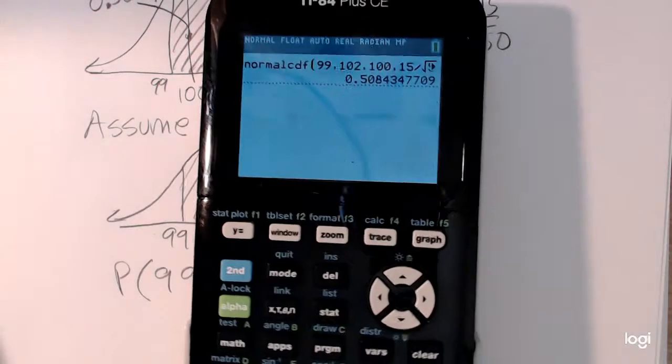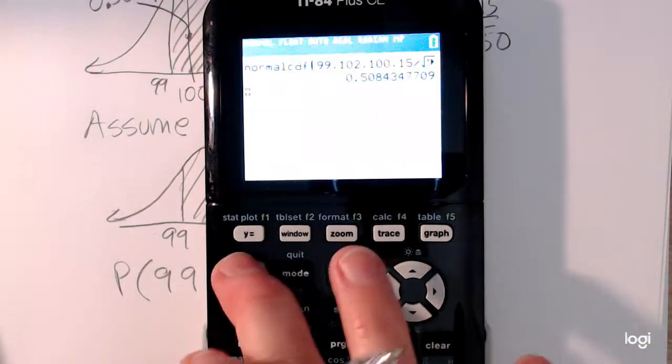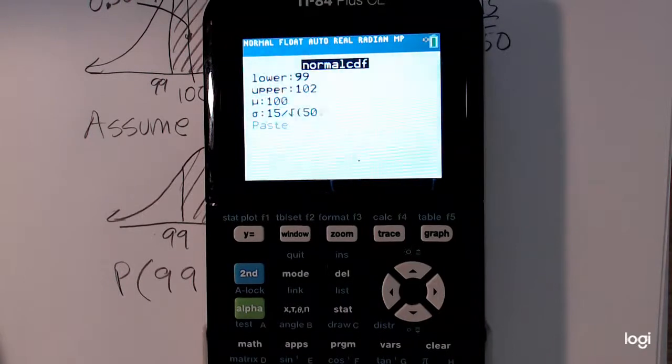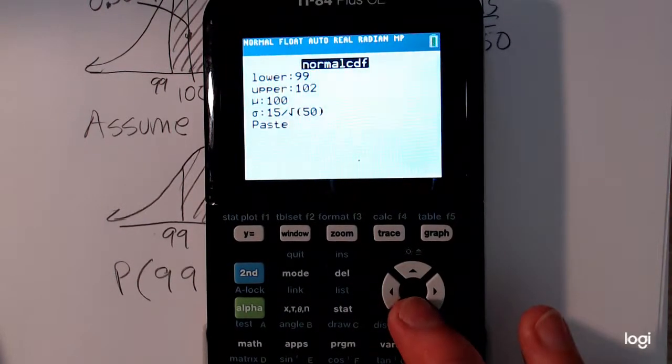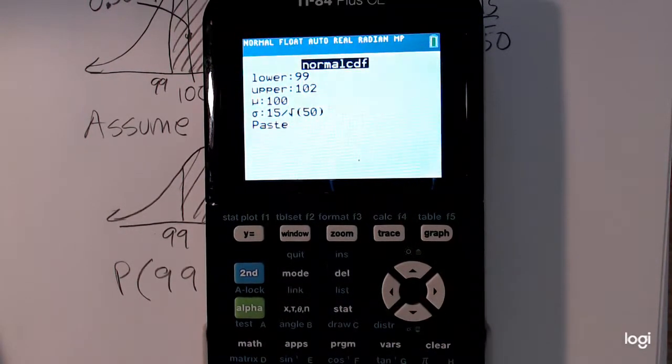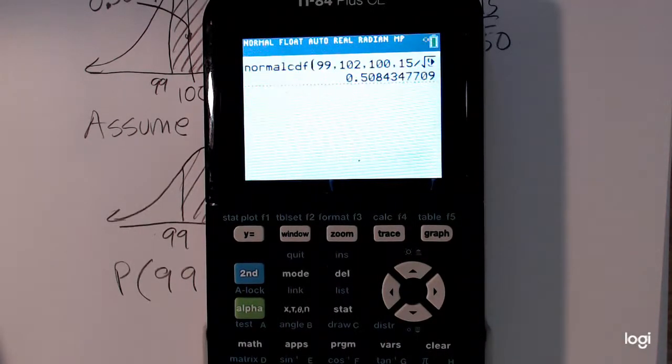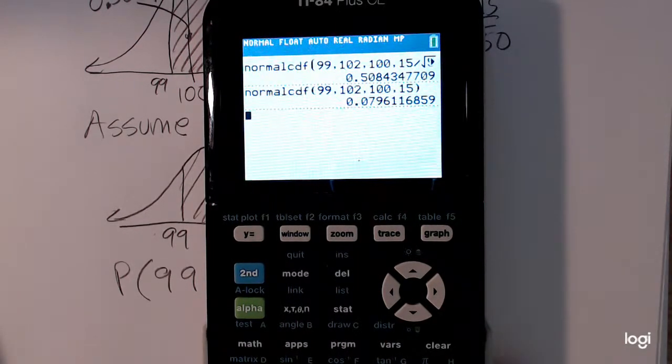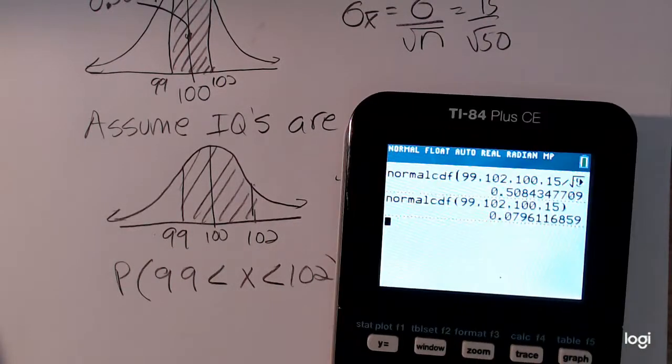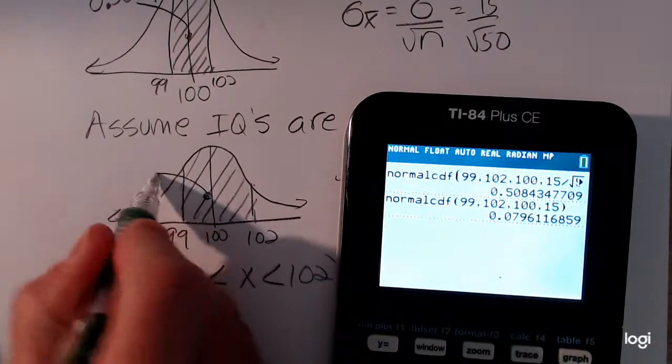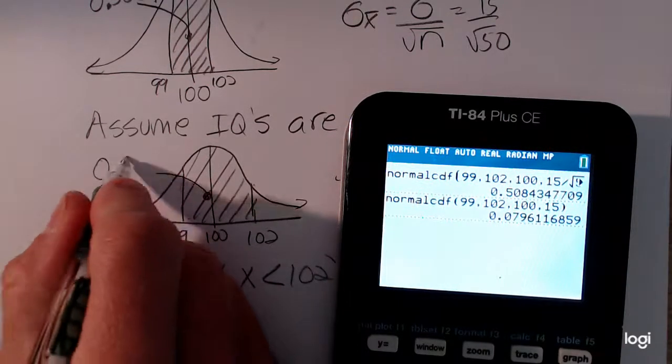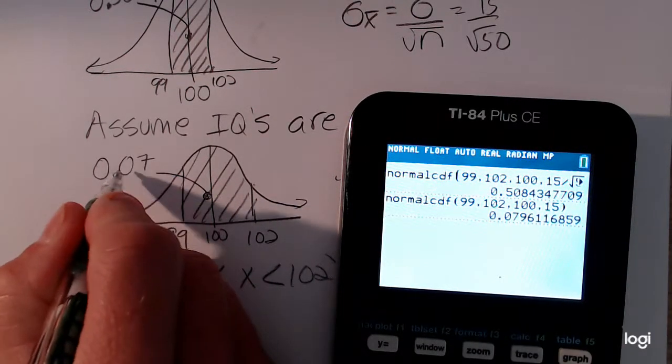So going back to my distribution menu, my lower bound, upper bound are the same, but I'm going to change that standard deviation. And then I get, now I clearly did not draw this proportionally correct, and that's okay. I'm just treating this as a visual aid.